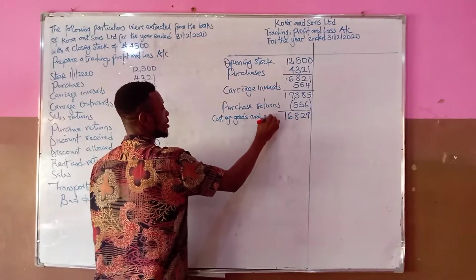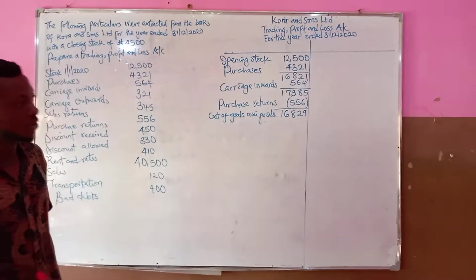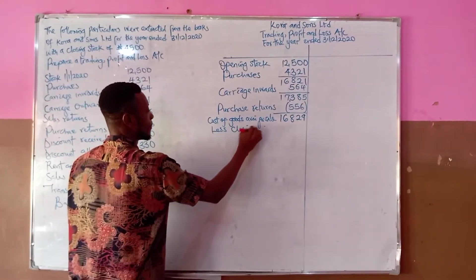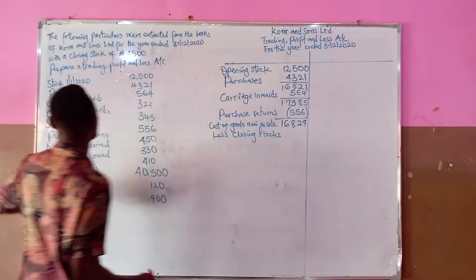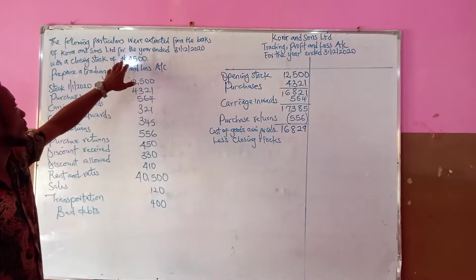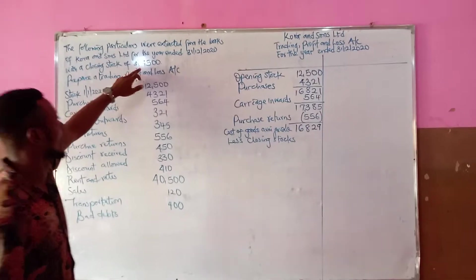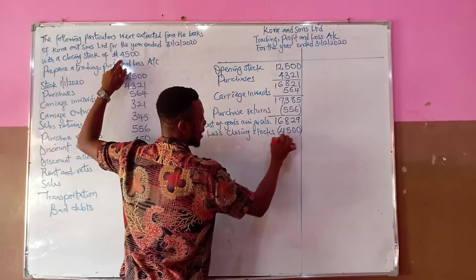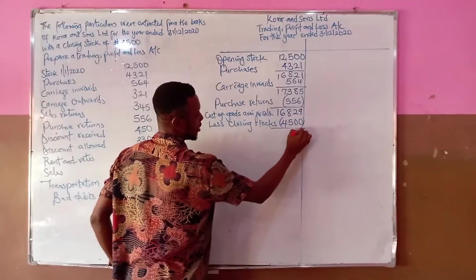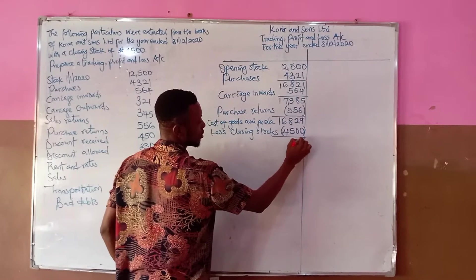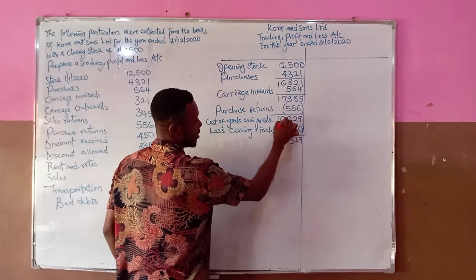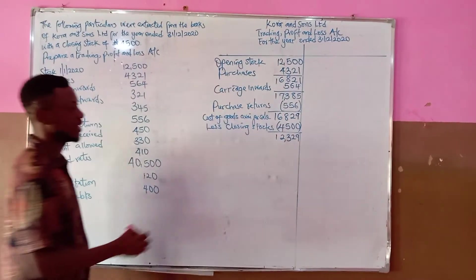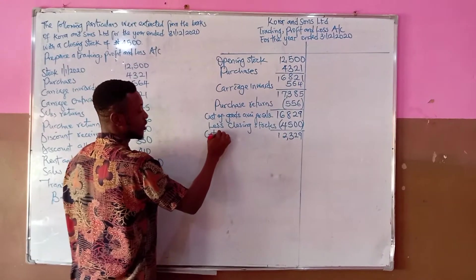Once we have the cost of goods available for sale, we subtract closing stock. From the question, closing stock is 4,500 — shown in brackets because we are subtracting it. This gives us a cost of goods sold of 12,329.